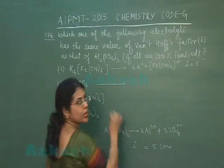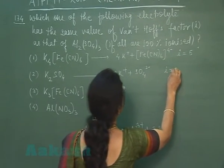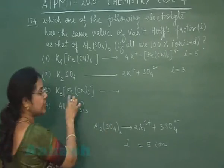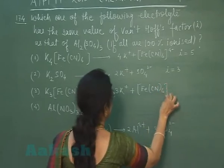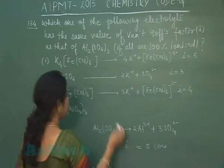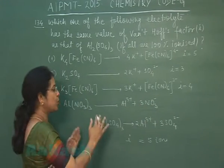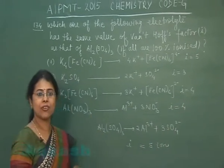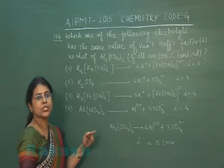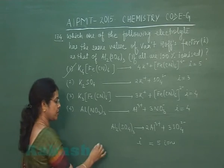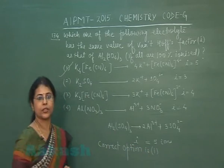Option 2: K₂SO₄ ionizes as 2 K⁺ and 1 SO₄²⁻, so i = 3. Option 3: K₃[Fe(CN)₆] gives 3 K⁺ and 1 complex ion, so i = 4. Option 4: Al(NO₃)₃ gives 1 Al³⁺ and 3 NO₃⁻, so i = 4. Among all options, only K₄[Fe(CN)₆] (option 1) gives i = 5, matching aluminium sulphate. So option 1 is correct.